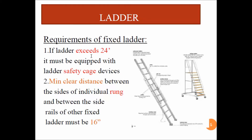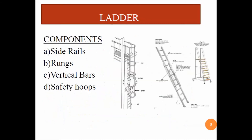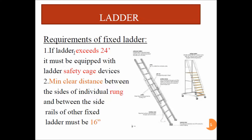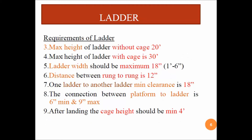These are the different requirements of a fixed ladder. If the ladder exceeds 24 feet, it must be equipped with a safety cage. The minimum clear distance between the sides of individual rungs and between the sides of rails of other fixed ladders must be fixed. If the ladder exceeds more than 24 feet, we must definitely provide safety cages.